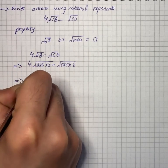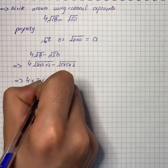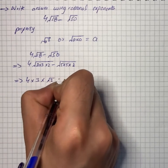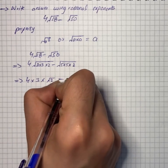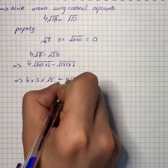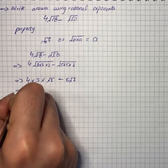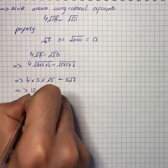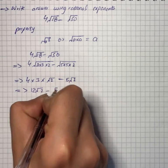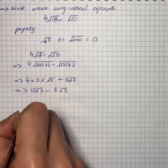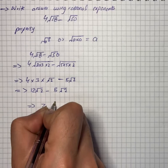On further simplification we have 4 × 3 × √2 minus 5√2. On simplification we have 12√2 - 5√2, that is 7√2.